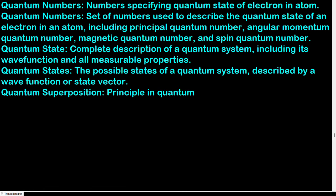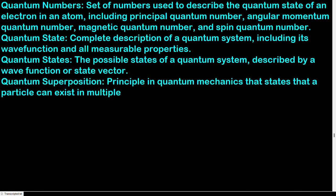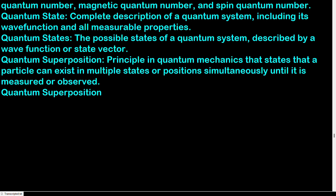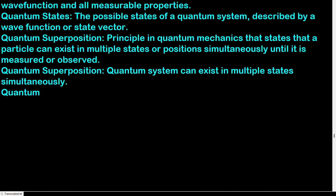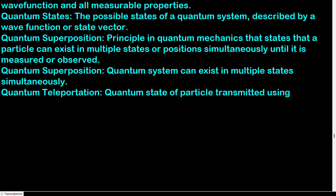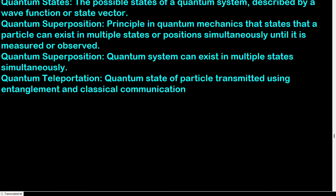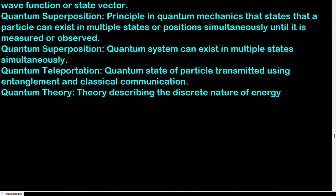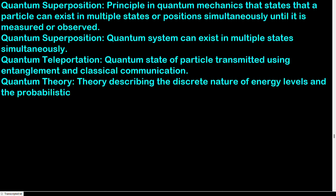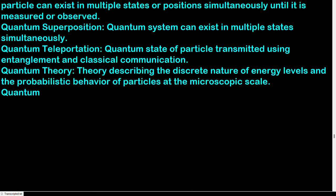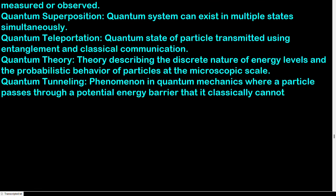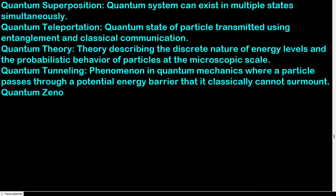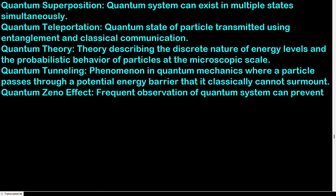Quantum superposition: principle stating that a particle can exist in multiple states or positions simultaneously until it is measured. Quantum teleportation: quantum state of a particle transmitted using entanglement and classical communication. Quantum theory: theory describing the discrete nature of energy levels and the probabilistic behavior of particles at the microscopic scale. Quantum tunneling: phenomenon where a particle passes through a potential energy barrier that it classically cannot surmount. Quantum Zeno effect: frequent observation of a quantum system can prevent it from evolving.